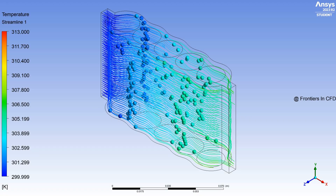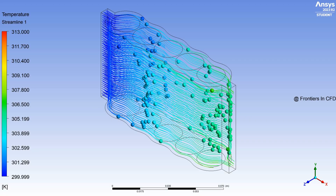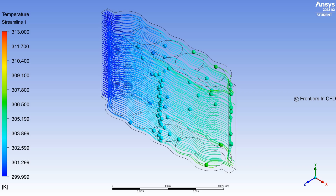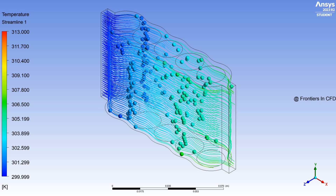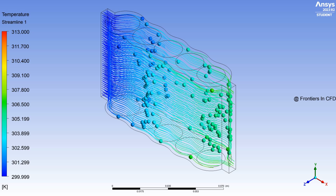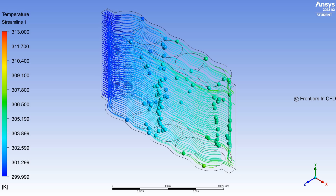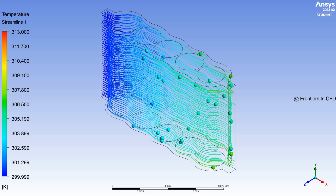Let's see the simulation for the temperature streamline. Here we have the fluid particles which are entering and leaving. We will see some variation in the color contours, which indicates the temperature variation of the fluid particle which is moving. This is how it represents the temperature streamline.